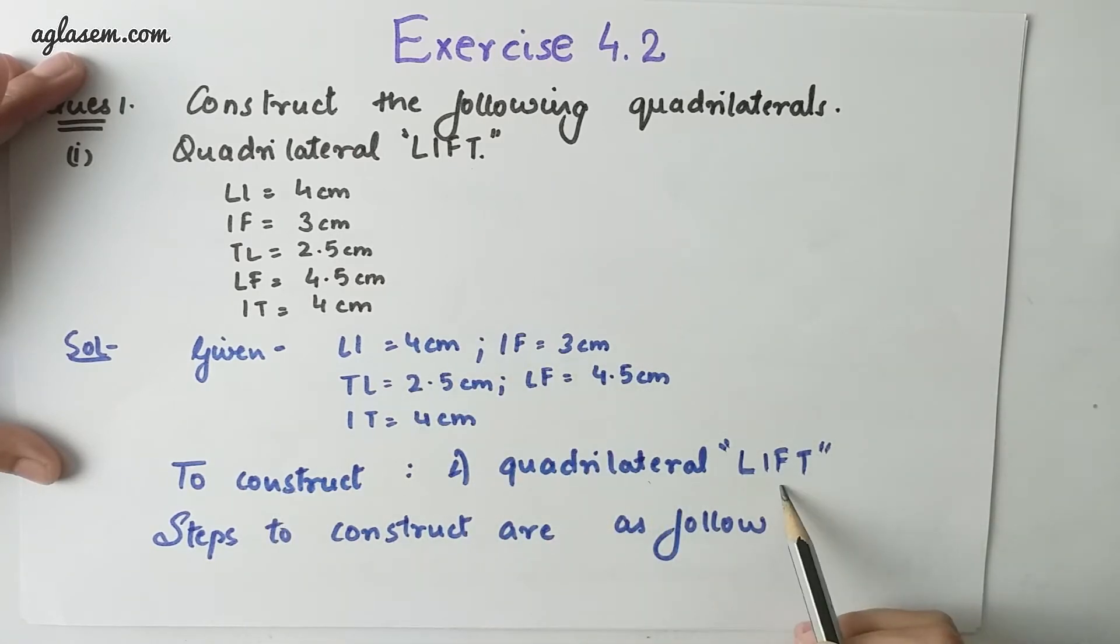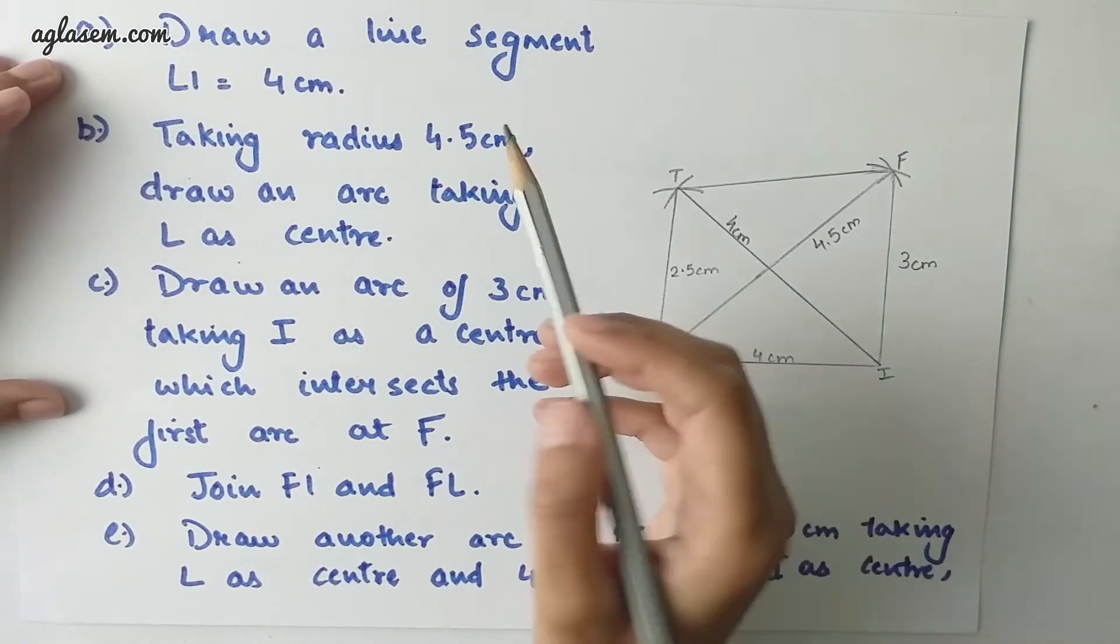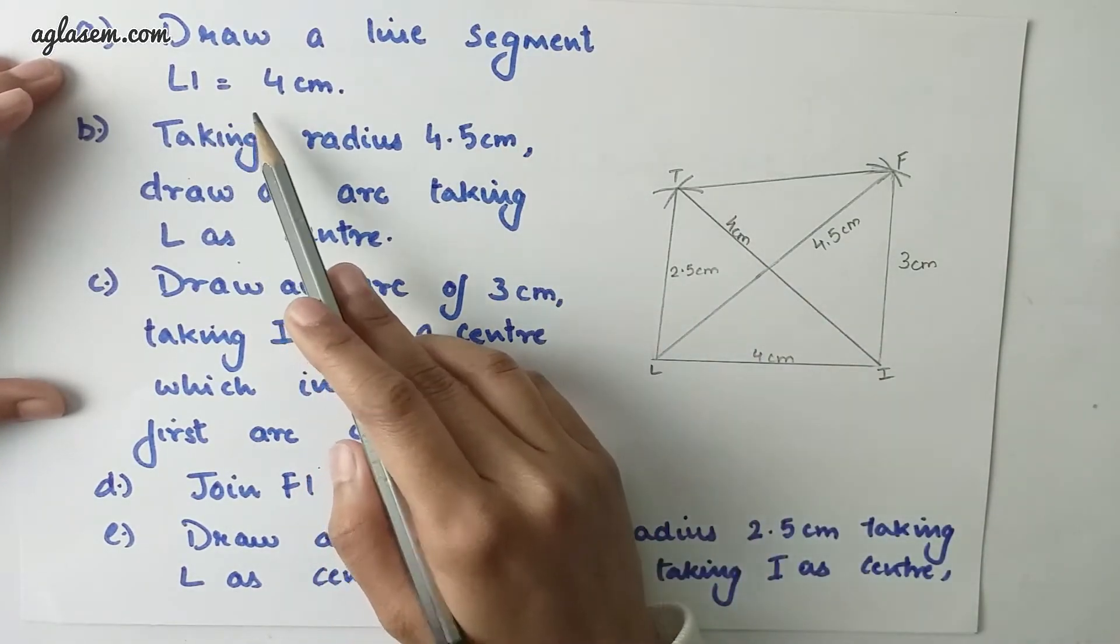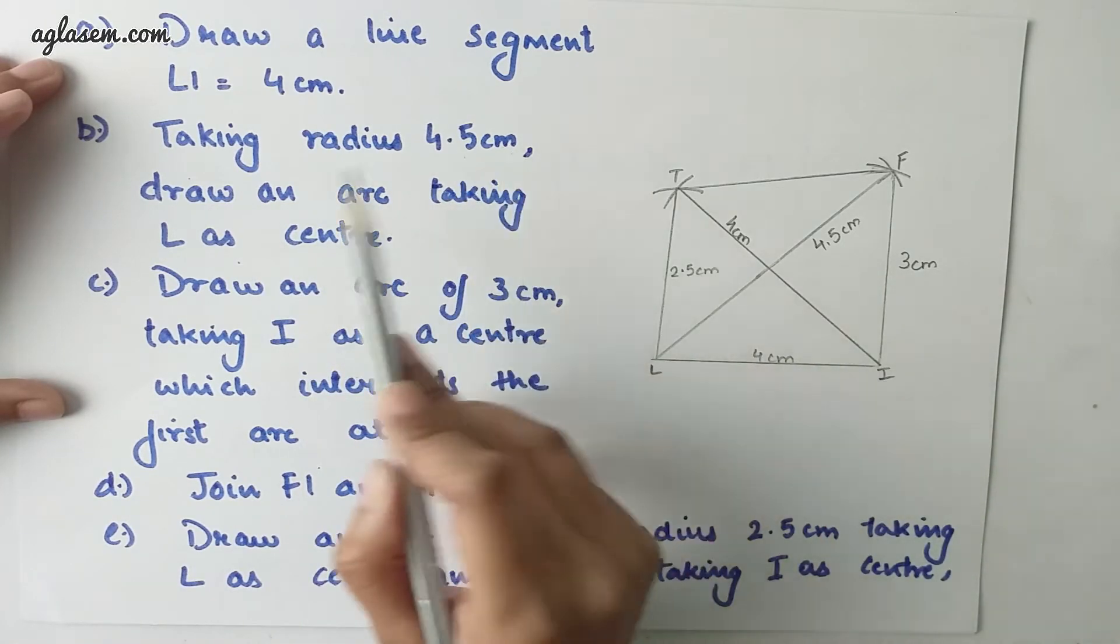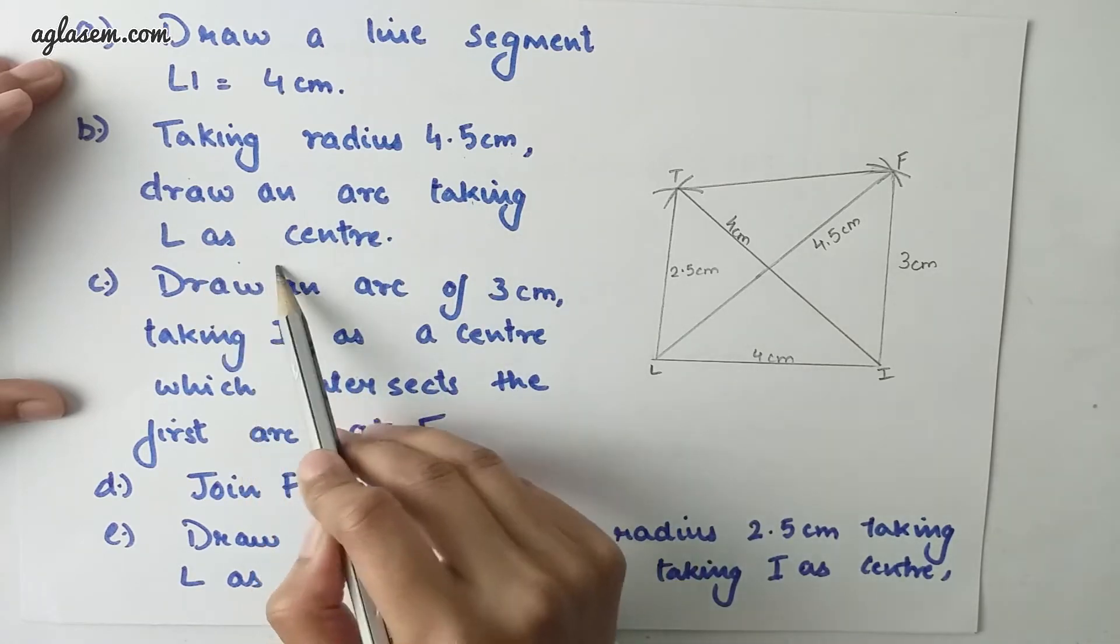To construct a quadrilateral LIFT we have to follow several steps. First, draw a line segment LI which is equal to 4 cm. Taking radius 4.5 cm, draw an arc taking L as center.